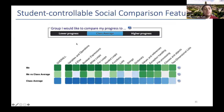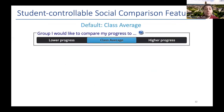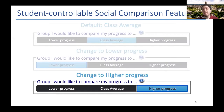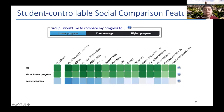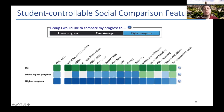On top of these open social learner model features, we added new control features where students can select from three different options to compare their progress. Every student starts by default comparing to the class average and can switch to lower progress or higher progress depending on what they'd like to compare to. Based on this selection, the visualization changes significantly. For example, comparing to the lower progress shows that in all topics you're ahead of the lower half of the class, while comparing to the higher half shows you need to work in most topics — which we believe may affect student behavior.